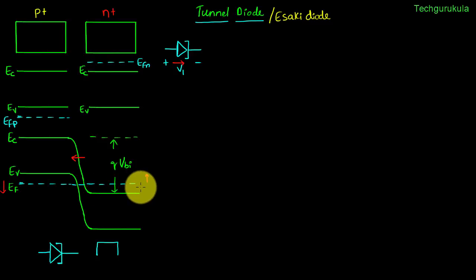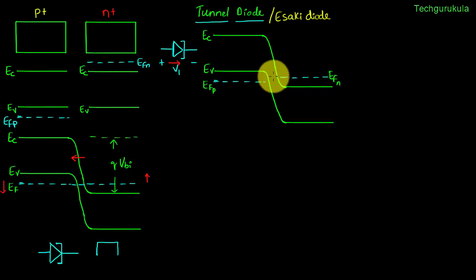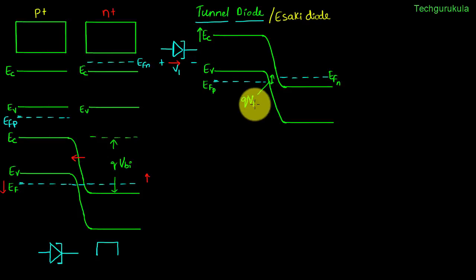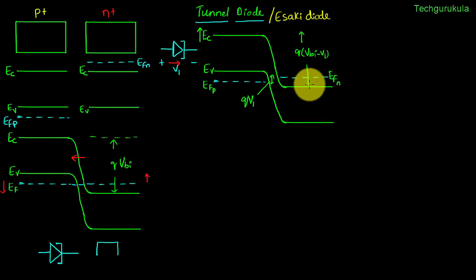Let me draw the energy band diagram for this scenario. The Fermi energy levels have split, and the difference between these two Fermi energy levels would be equal to q times V1, the potential that we applied — we multiply by q because the scale is in electron volts. The barrier potential would have reduced from qVbi to qVbi minus V1. We can see that on the n-side, below the Fermi energy level, there will be a lot of electrons in the conduction band.